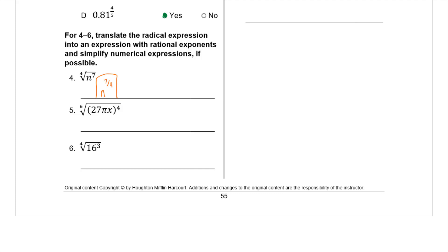So the answer is n to the 7/4, and since you can't simplify 7/4, that's our answer. On number 5 we have three things inside the parentheses all to the fourth power, with the sixth root. Rewriting with a rational exponent, 4/6 simplifies to 2/3. We check if 27 to the 2/3 simplifies: the 2/3 means the cubed root, and the cube root of 27 is 3.